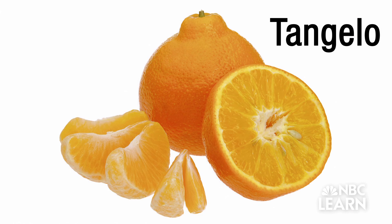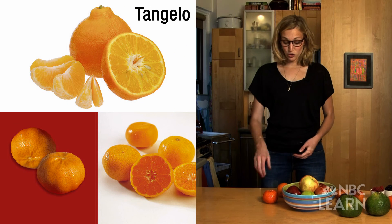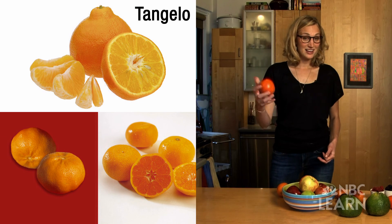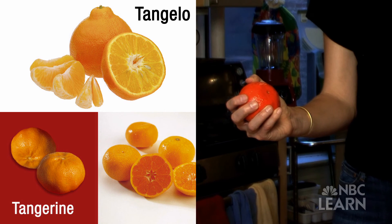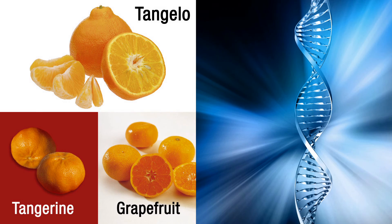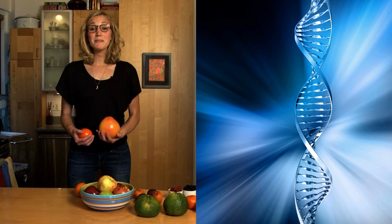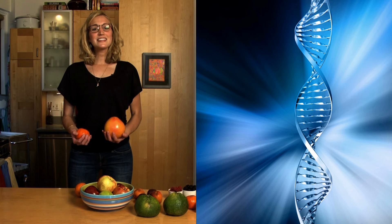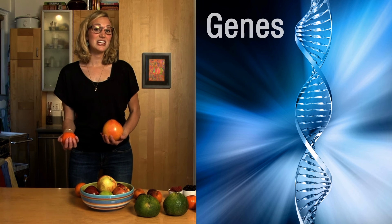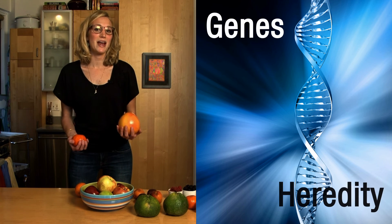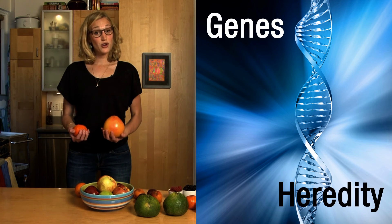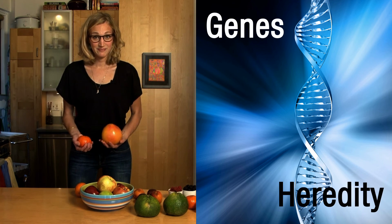How about this one? It looks kind of like an orange, right? Well, that's because it's a cross between a tangerine and a grapefruit. Where do these exotic fruits come from? It all has to do with genes and heredity, or the traits passed down from the parent.